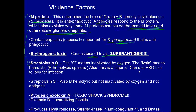Clinically we can measure ASO, anti-streptolysin O, to look for infection. Streptolysin S is not as relevant and is not inactivated by oxygen. Pyogenic exotoxin A causes toxic shock syndrome, very similar to that of S. aureus but with a few differences. Exotoxin B causes necrotizing fasciitis. The bacteria also produces hyaluronidase, streptokinase — an anticoagulant still used today — and DNase.